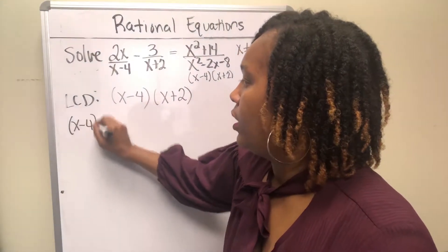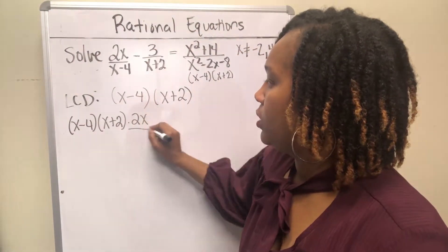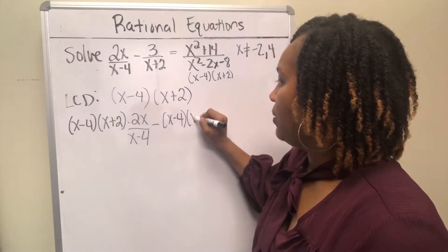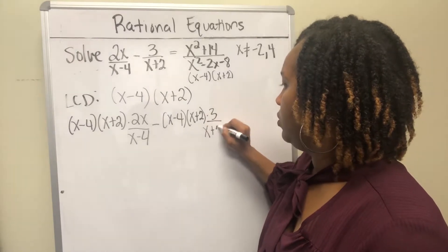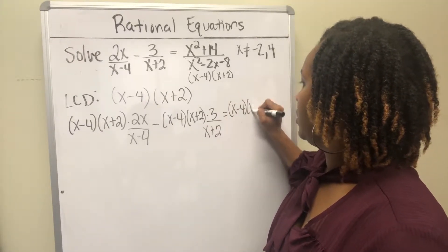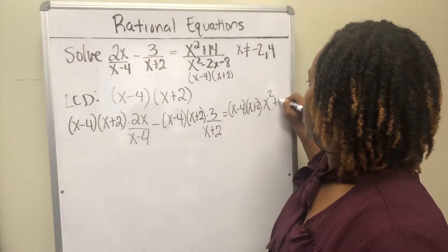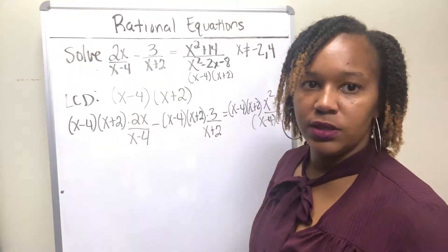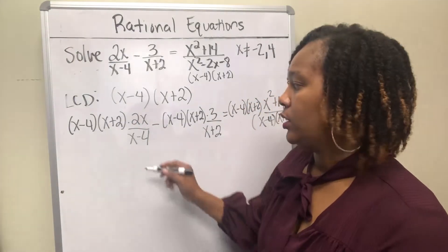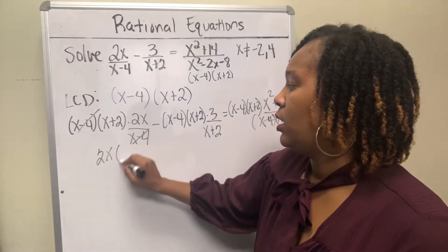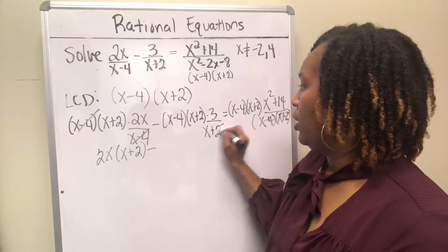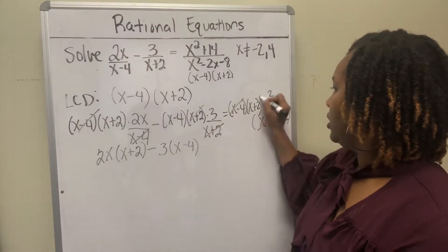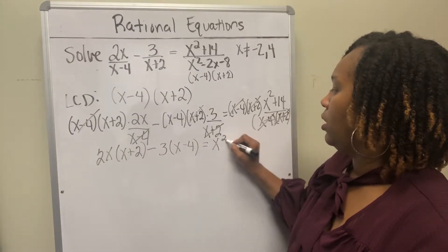Multiply each term by the LCD: (x minus 4)(x plus 2) times 2x over (x minus 4); then (x minus 4)(x plus 2) times 3 over (x plus 2); then (x minus 4)(x plus 2) times (x squared plus 14) all over (x minus 4)(x plus 2), using the factored form of that denominator. Multiplying by the LCD eliminates the fractions. The x minus 4 cancels, leaving 2x times (x plus 2). The x plus 2 cancels, leaving 3 times (x minus 4). And both factors cancel in the last term, leaving x squared plus 14.